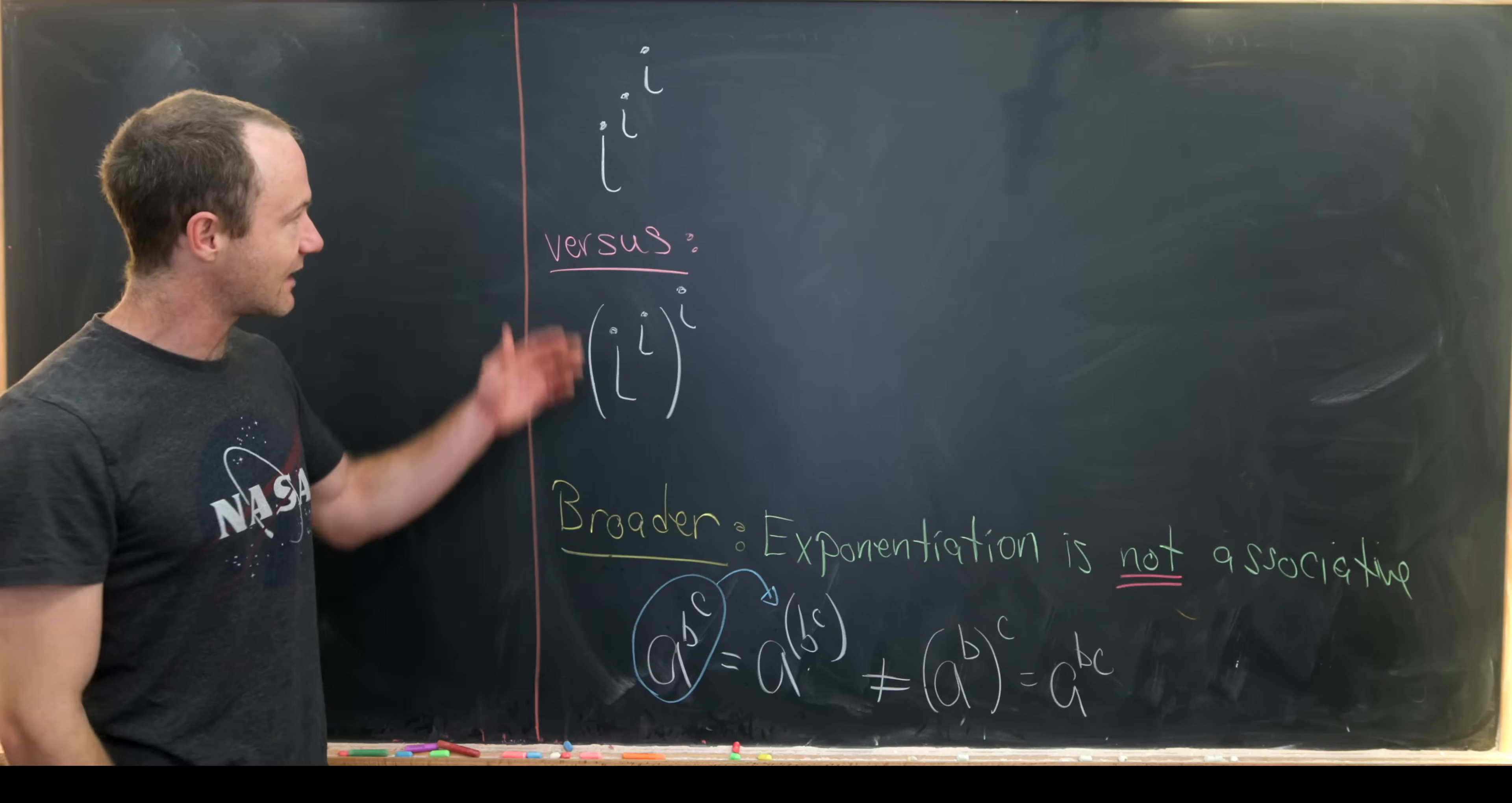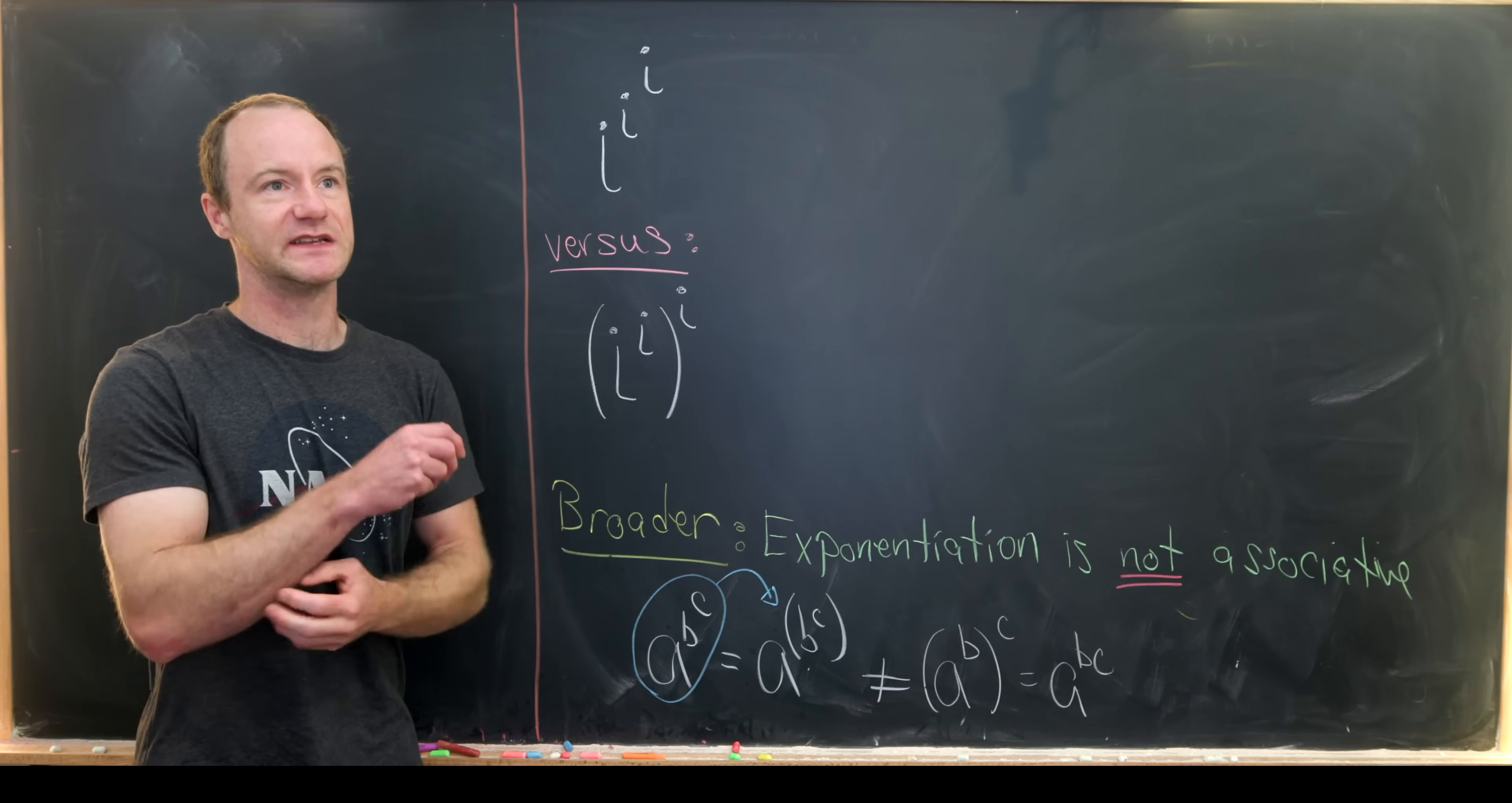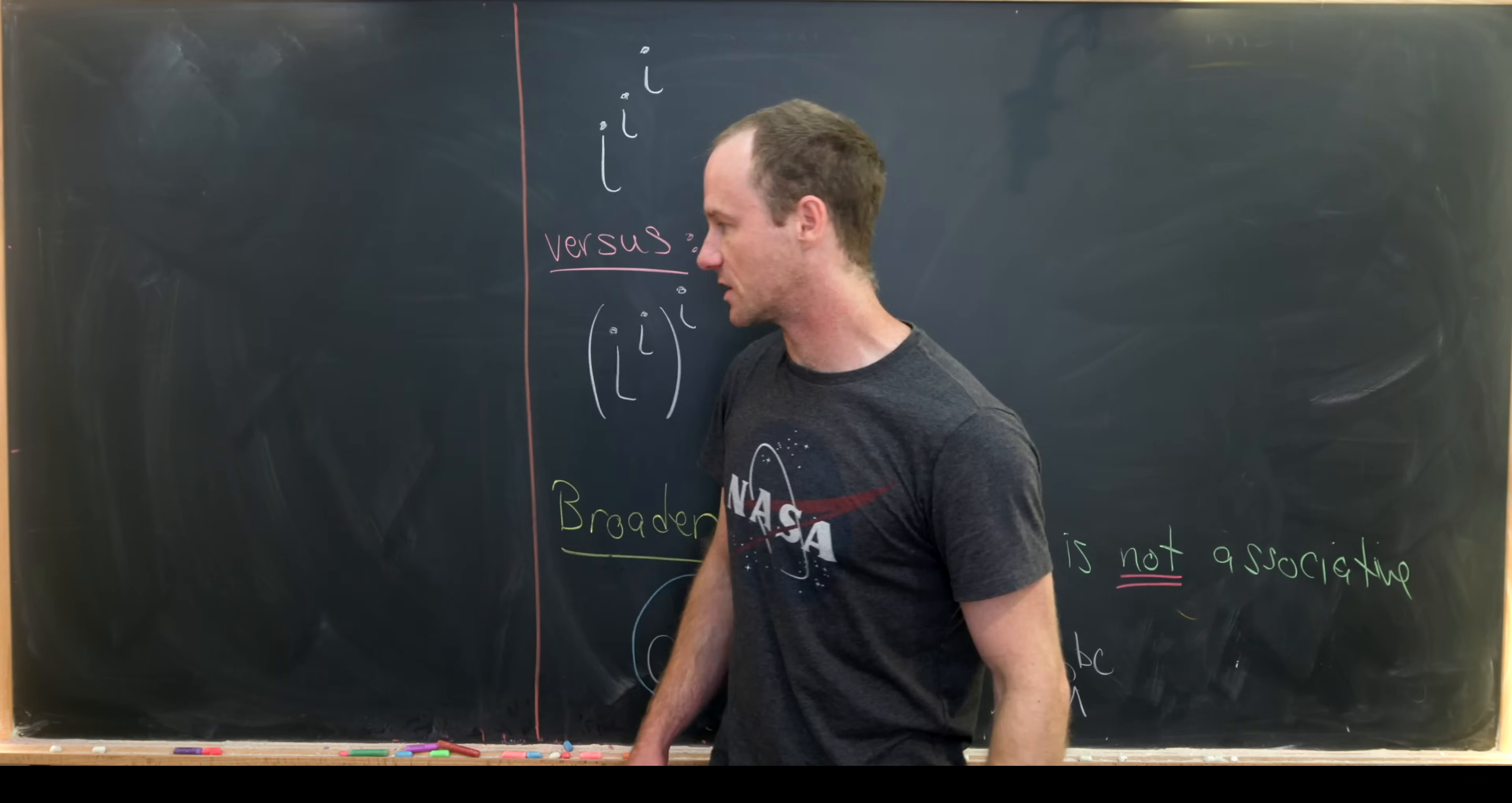And I want to highlight that with these two examples: i to the i to the i versus i to the i to the i power. And we'll see that one of these is quite nice and one of them is kind of a bummer. And one of them is nice in a way that if you keep repeating this exponentiation it just gets nicer and nicer and nicer, whereas one kind of blows up and gets super gnarly.